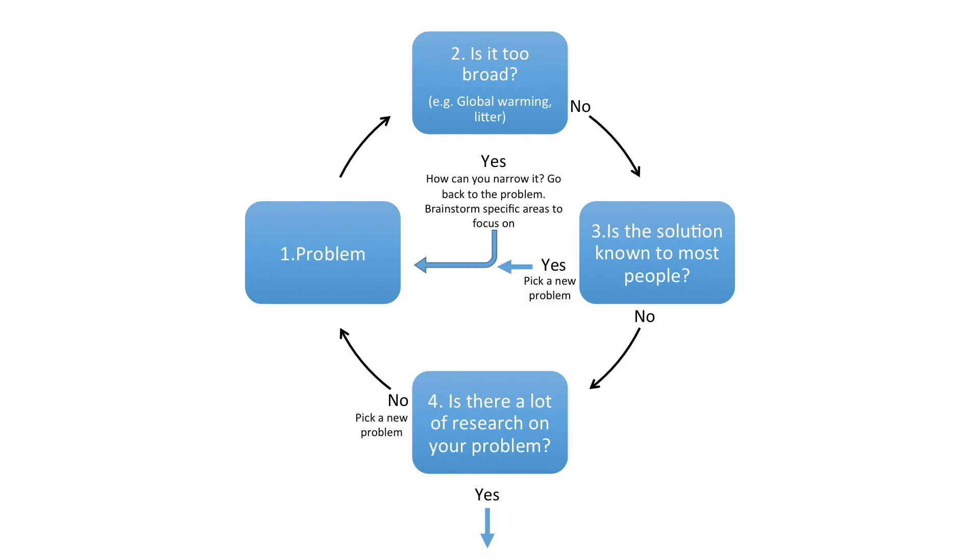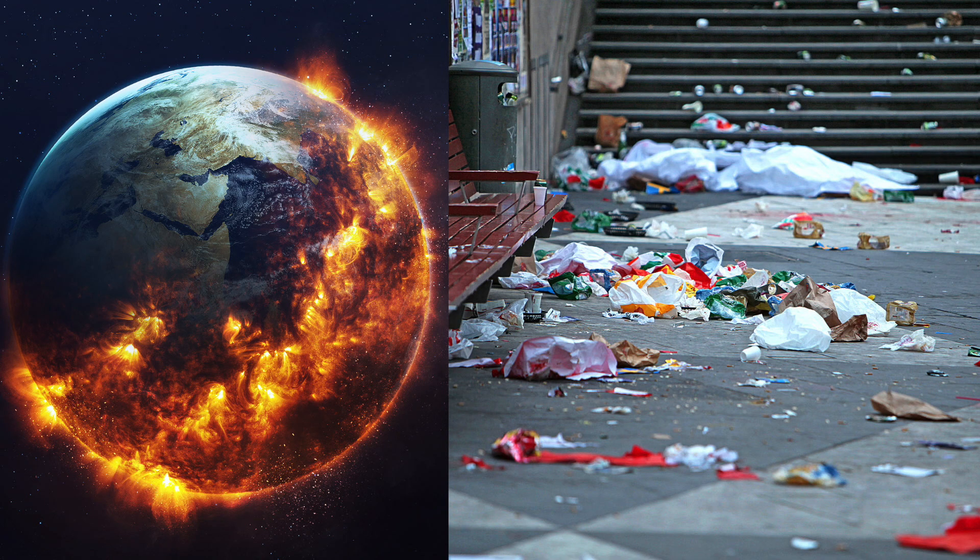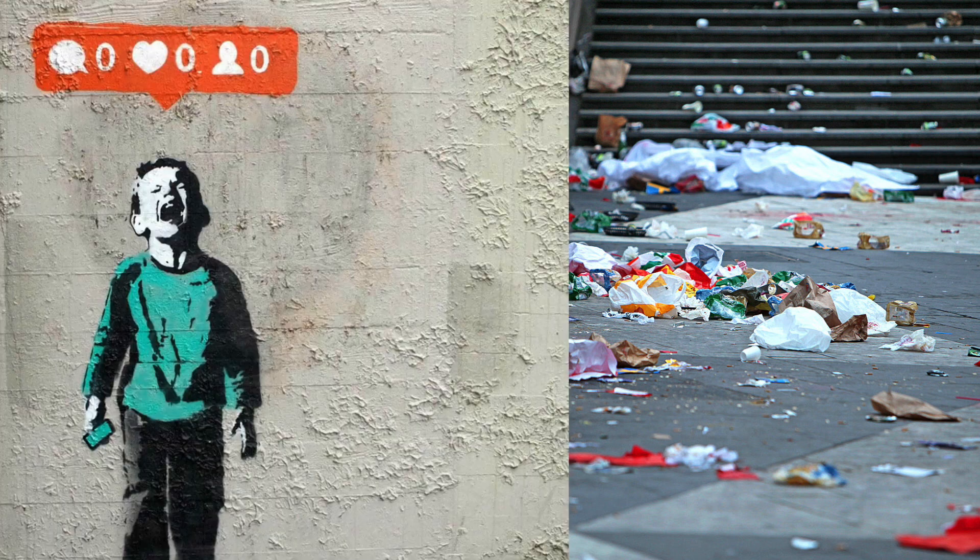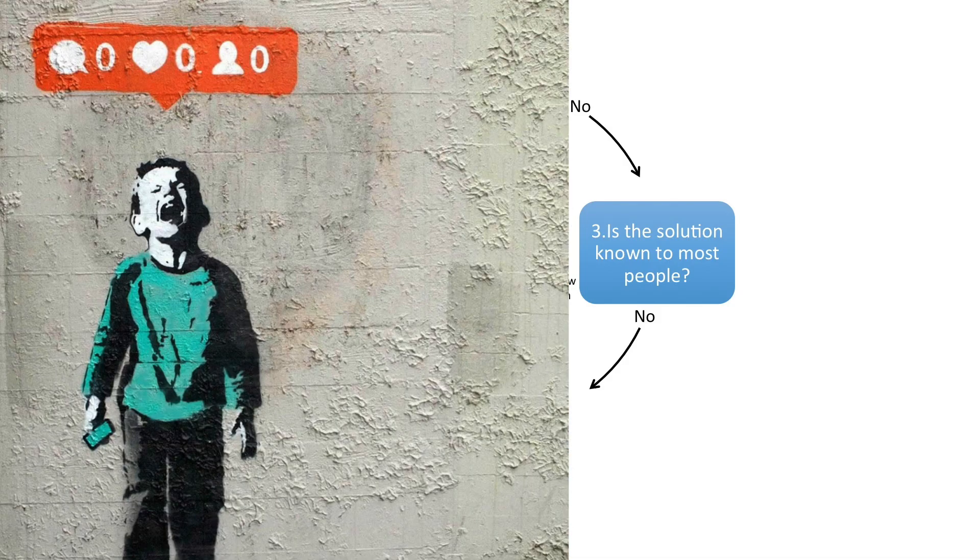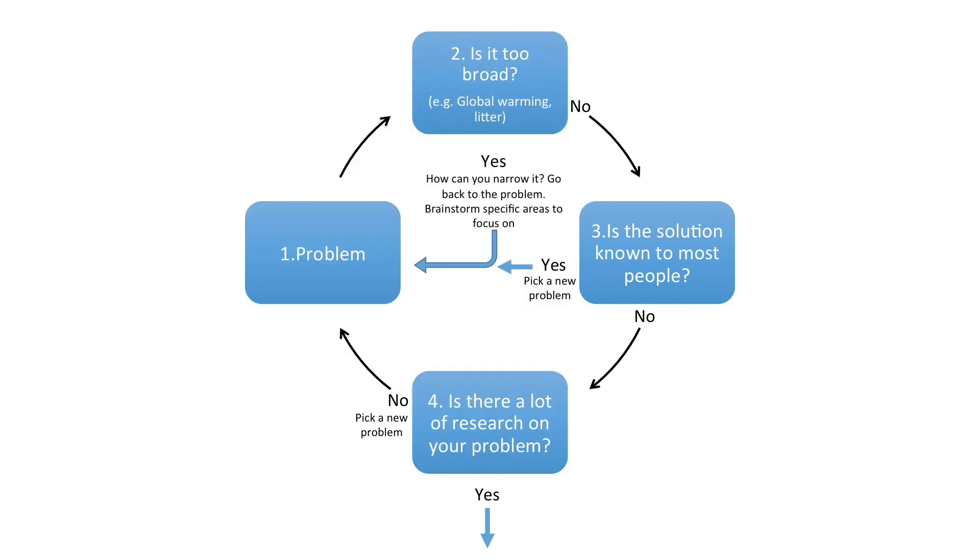So by now you should have thought of three problems that you are interested in, for example global warming, litter, and negative effects of social media. For your project you need to pick one problem and then narrow it down.